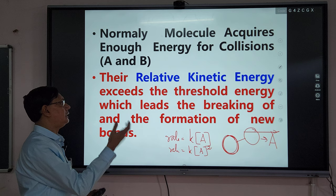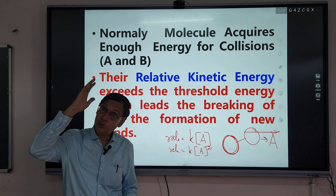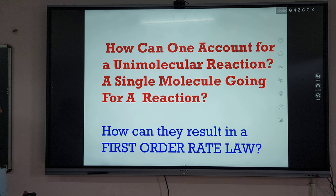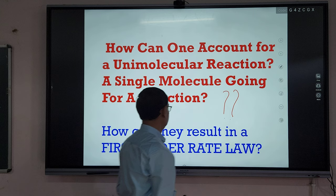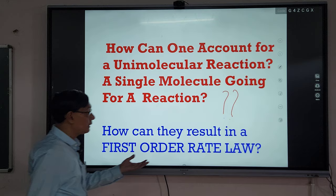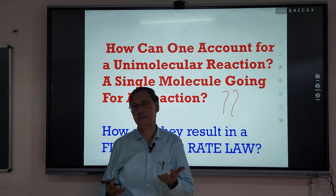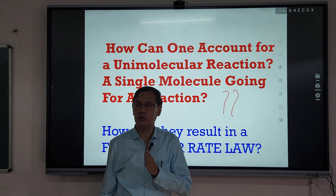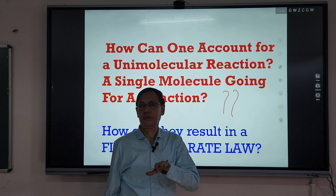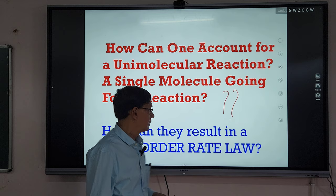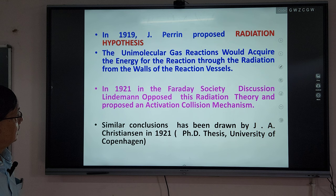In normal collision, relative kinetic energy exceeds the threshold energy and there is bond-breaking and bond-making. That was the problem — this is 102-year-old chemistry. How can one account for a unimolecular reaction where a single molecule undergoes reaction? At very high pressure and high concentration, the unimolecular gas-phase reaction generally follows first-order kinetics. But at low pressure, it is second-order kinetics.